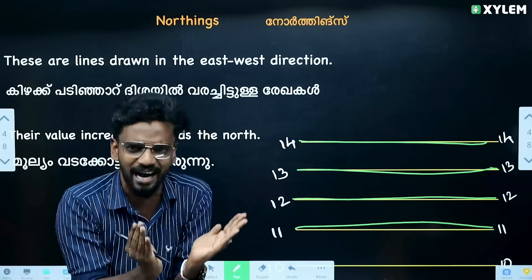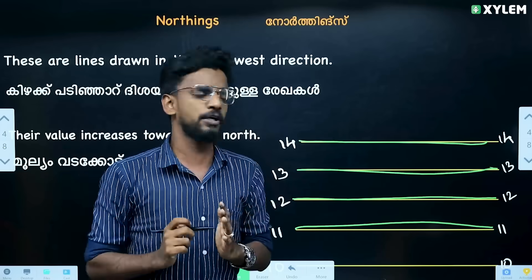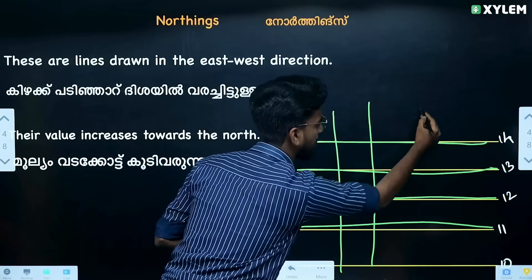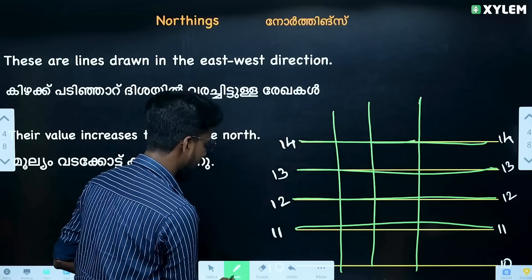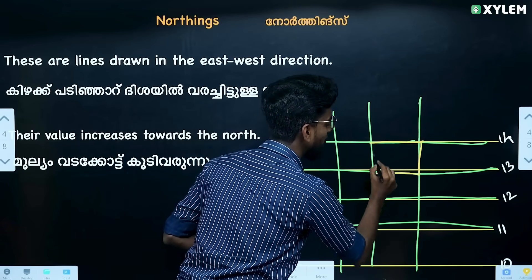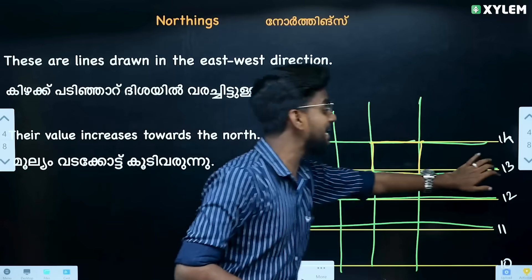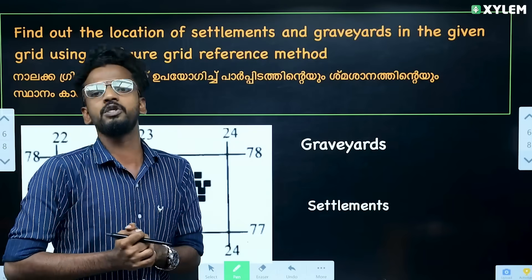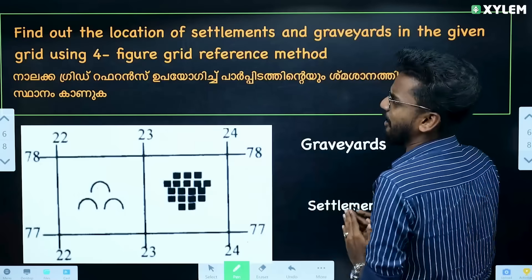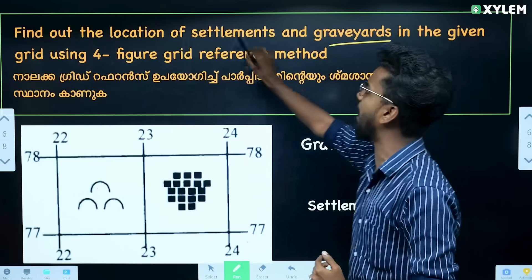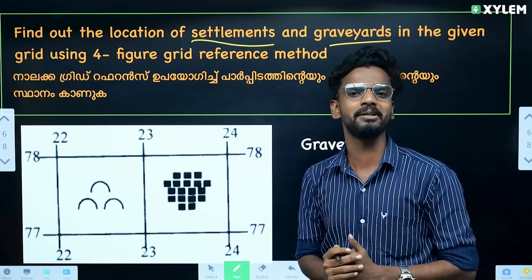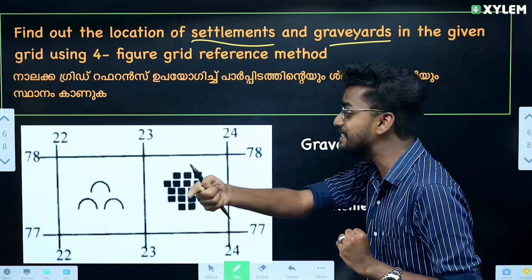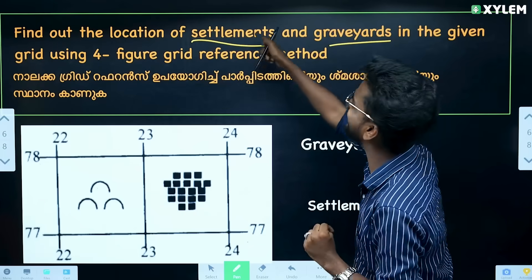So we are going to a grid reference. The grid reference describes a particular square on the map — the same named square. If we need to do a question in the exam such as: 'Find out the location of settlements and graveyard,' we use the grid reference. In this chapter, we have a lot of symbols — for example, settlements and graveyard symbols.